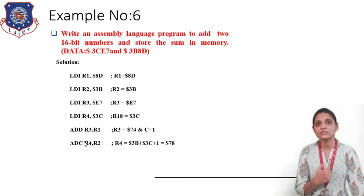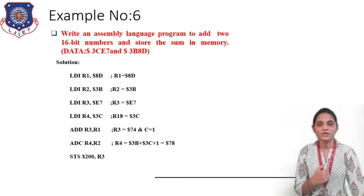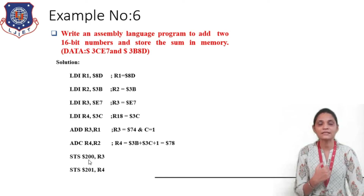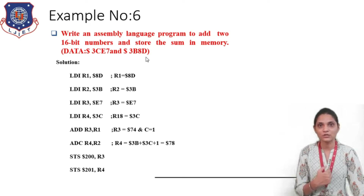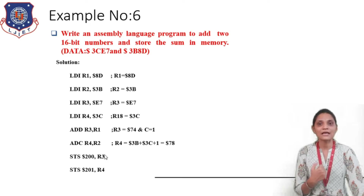After this instruction we have to store the result inside some memory location. For this we use the STS instruction: STS 200, R3 — this will store the content of register R3, the first addition result, at memory location 200. Then STS 201, R4 — this will store the second addition result at memory location 201. So by this way, first we add the lower byte, then add the upper byte with the ADC instruction to handle carry, and lastly store the result using STS.